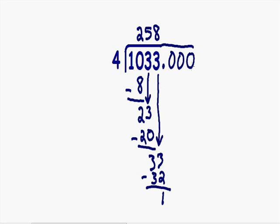The next thing I'm going to do is bring this decimal point straight up, so I'm going to add a decimal point right after this 8. Now I'm just going to bring down our next number — I'm going to bring down this number 0.